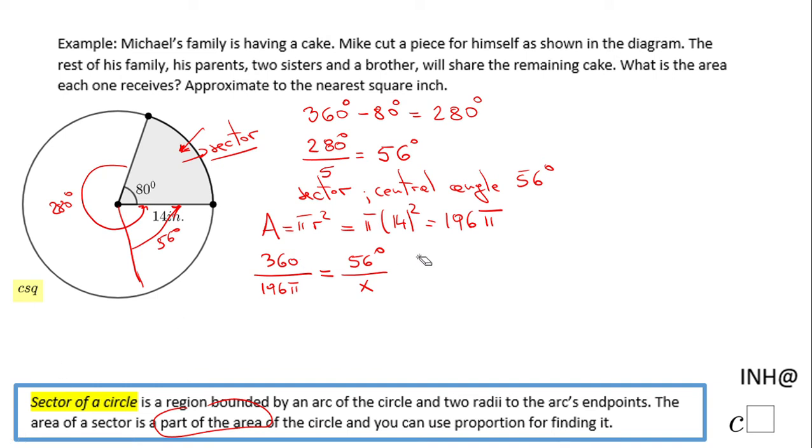Now we can cross multiply. We have 360 times x equals 196π times 56. In order to solve for x, we divide by 360.